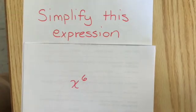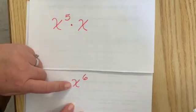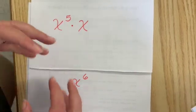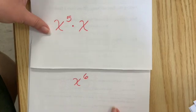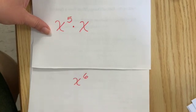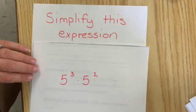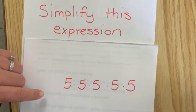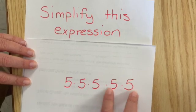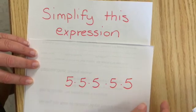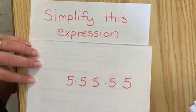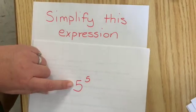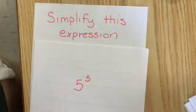So again, think about how I could go from this to this without expanding it all out. So let's try one more where we expand it out. So five to the third times five to the second would be five to the third times five to the second. And then write it with an exponent. And that would be five to the fifth power.